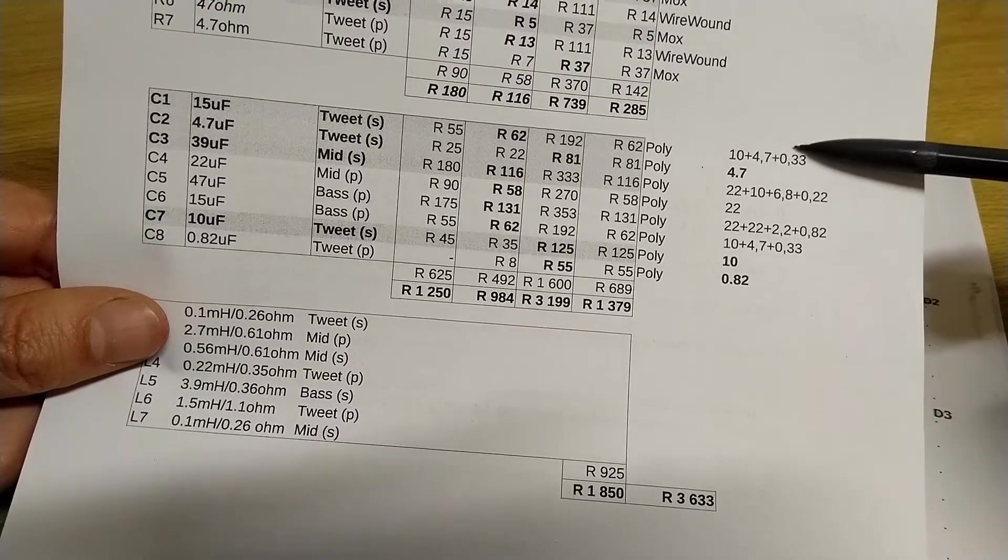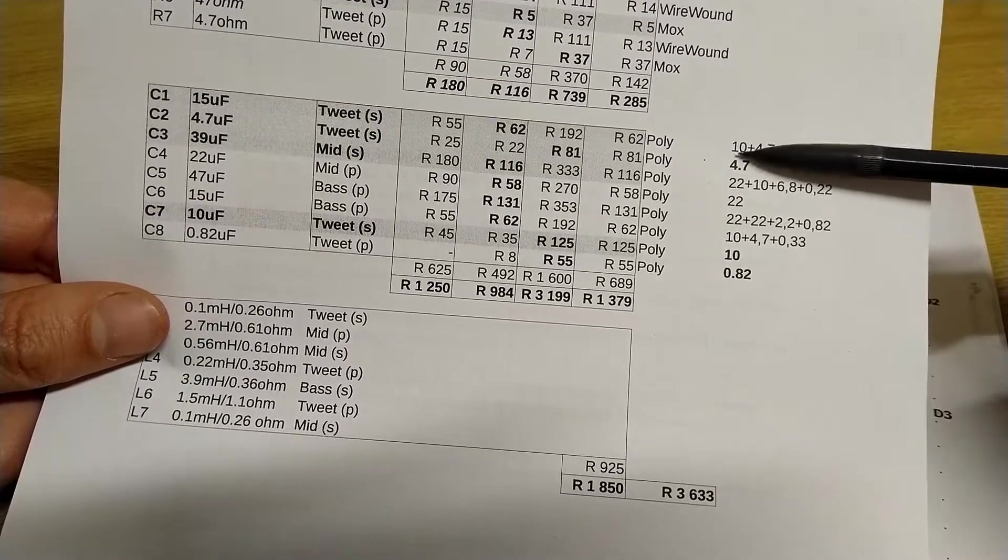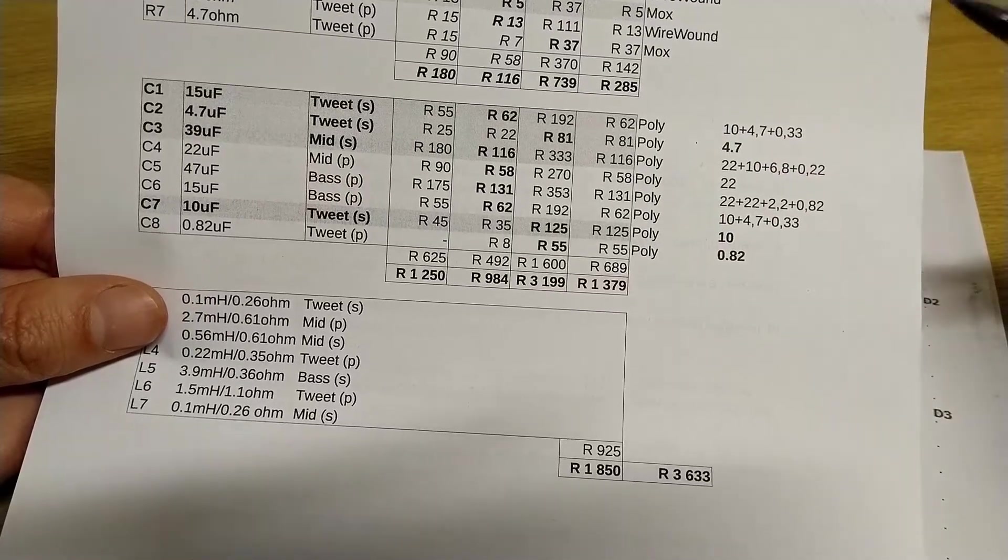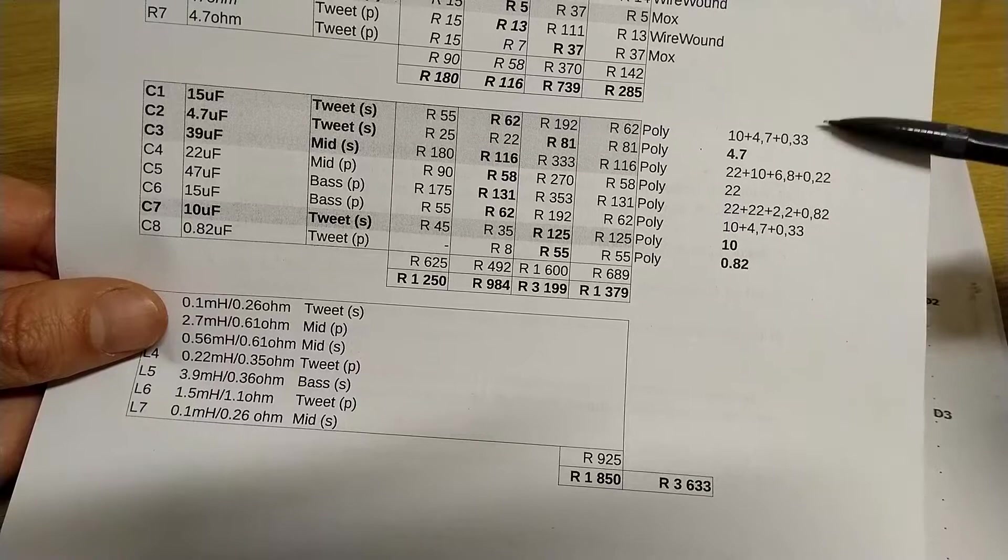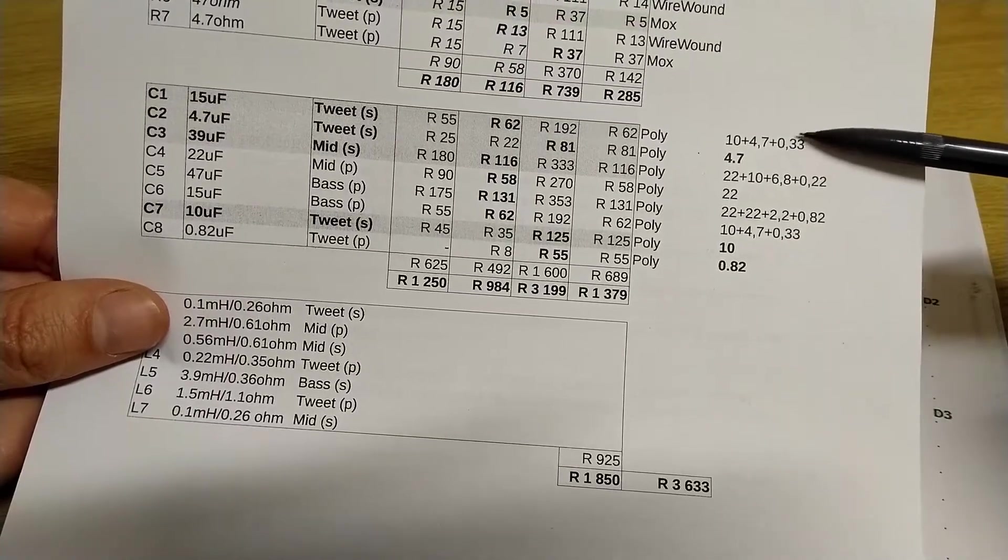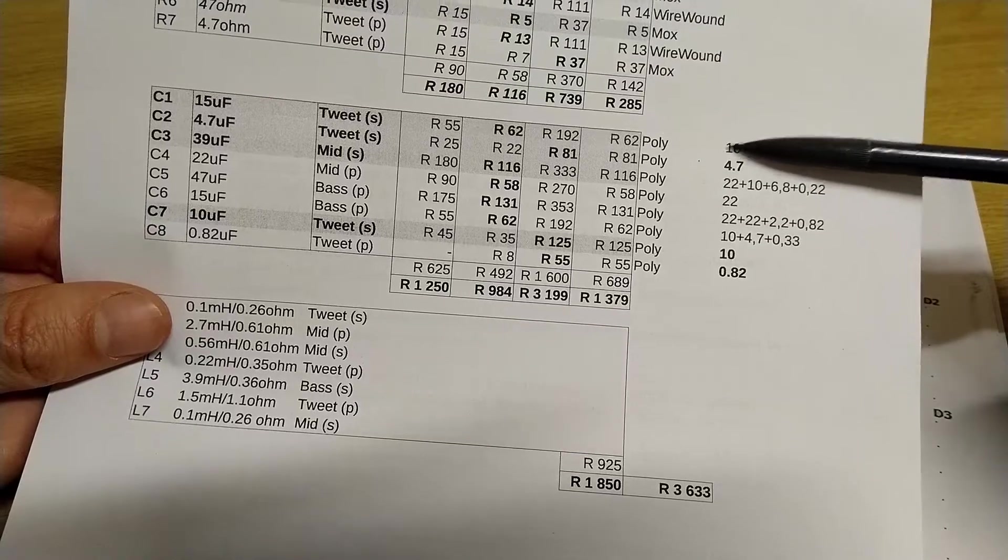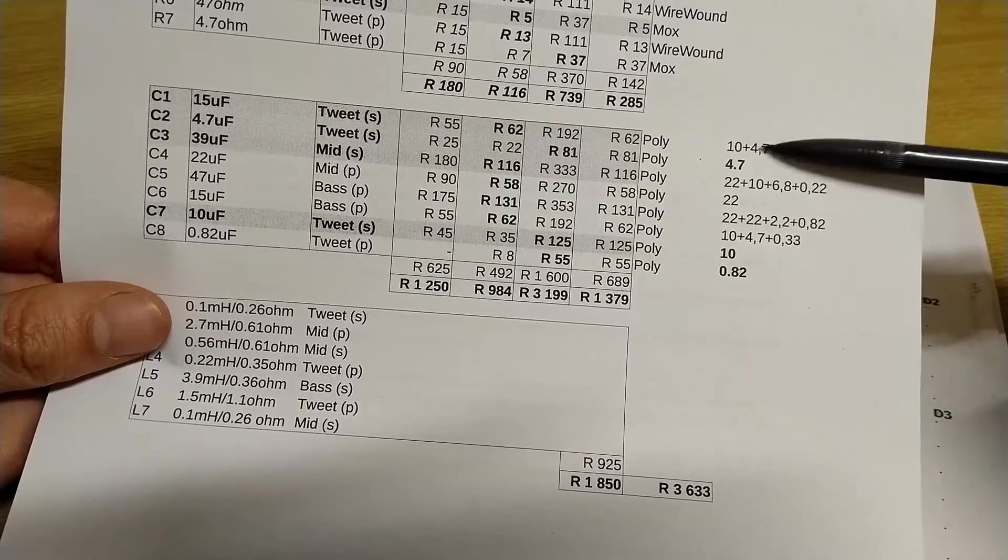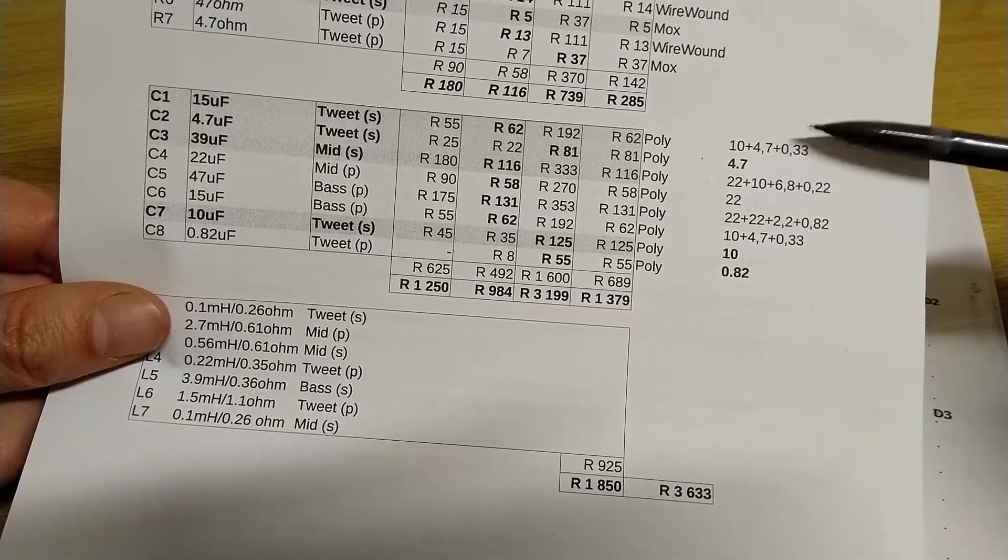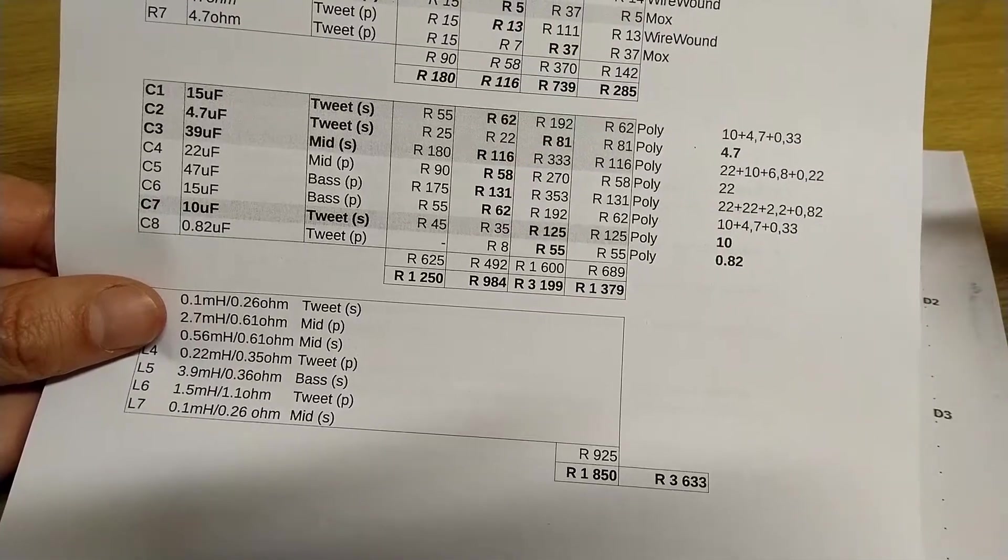The nice thing about having the 0.33 is if the two capacitors, the 10 and the 4.7, end up being over that when I measure them with my ESR component tester, I can just omit that one. If it was 10.4 and 4.7, then I'd drop that one and then I'd be at 15.1. It's pretty cool, a little bit of flexibility.